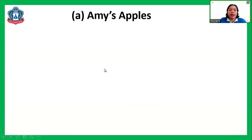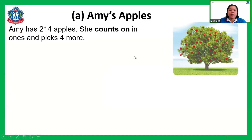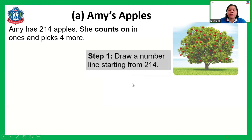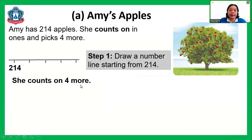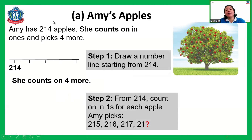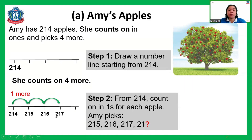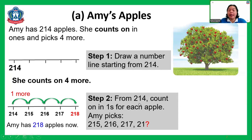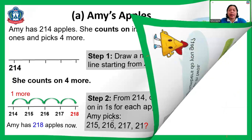Now look at Emmy's apples. Emmy has 214 apples. She counts on in ones and picks four more. To count on, we can use a number line. Starting from 214, she counts on four more: 215, 216, 217, and 218. So Emmy now has 218 apples. We simply added four to 214.